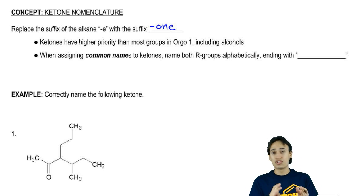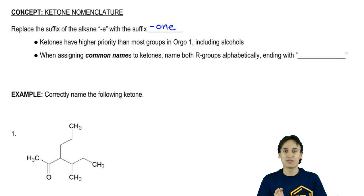If you saw an alcohol and a ketone next to each other and you had to figure out which one gets the higher priority with naming and numbering, you would pick the ketone.